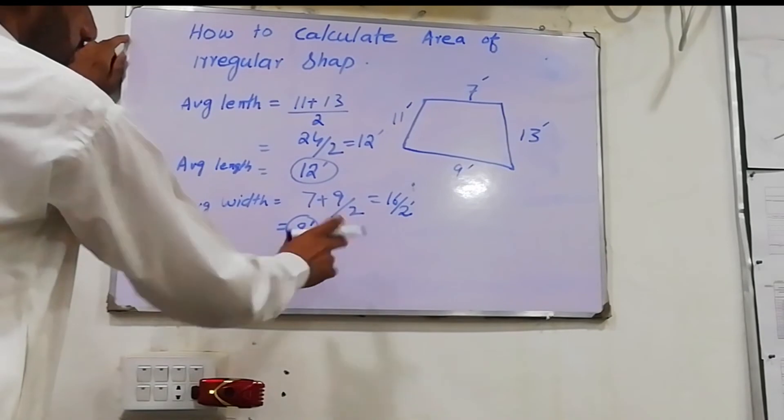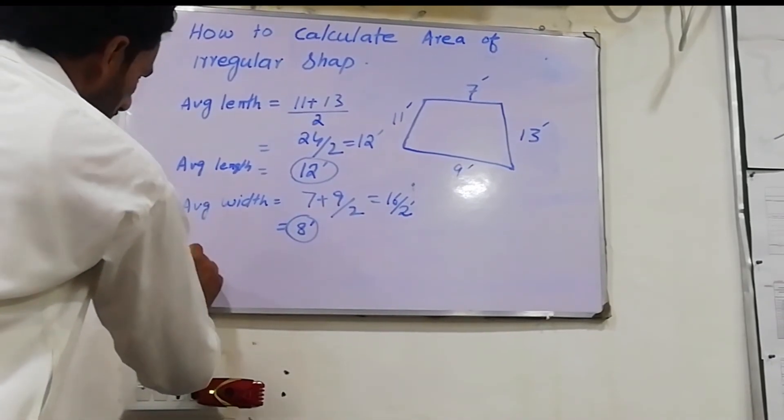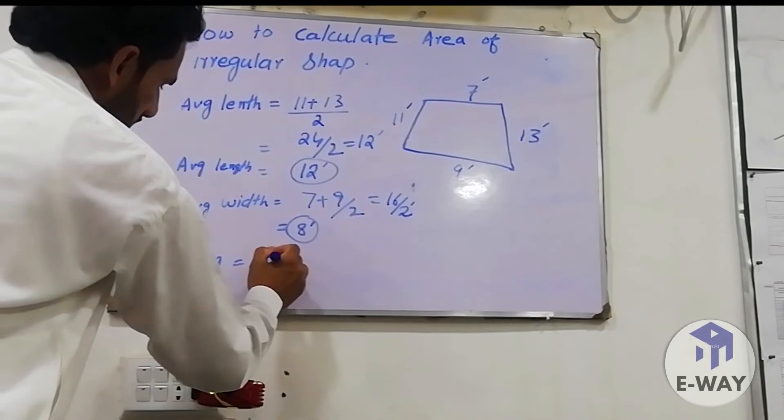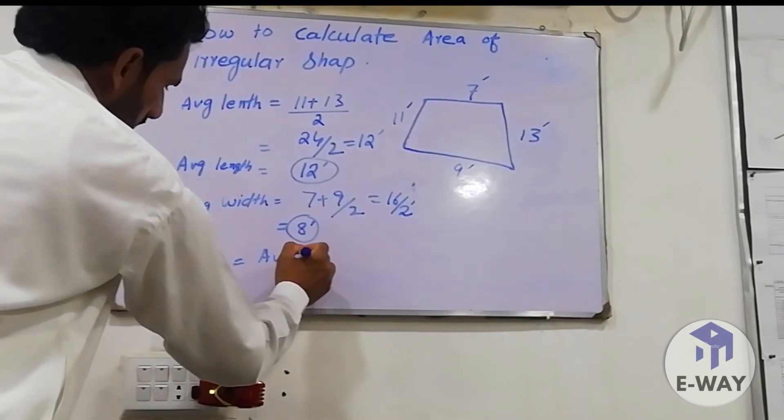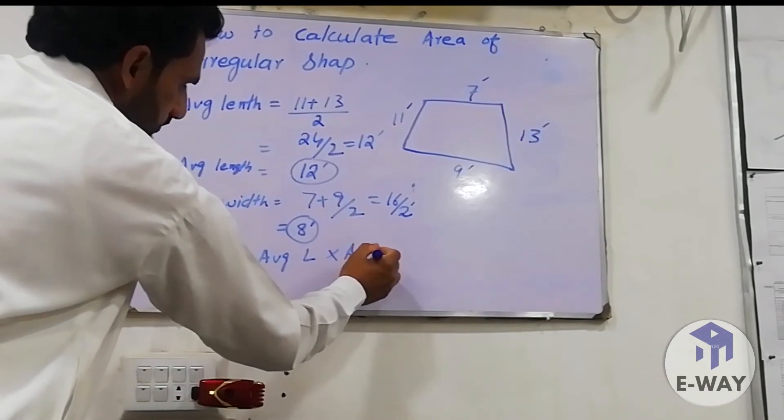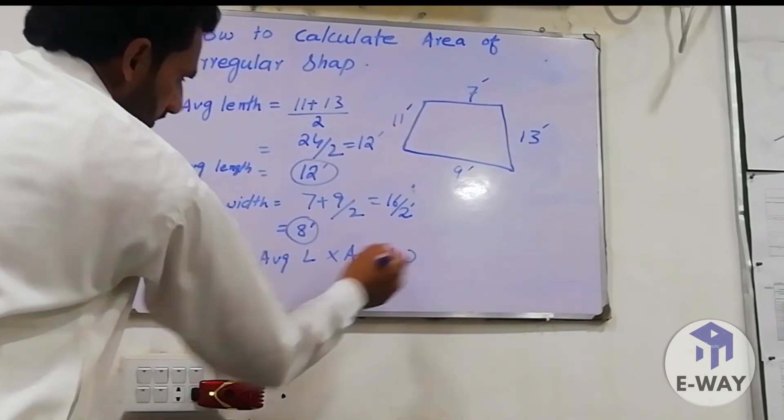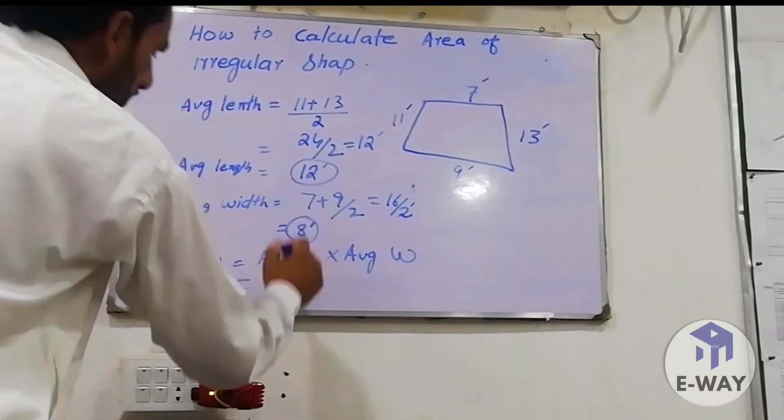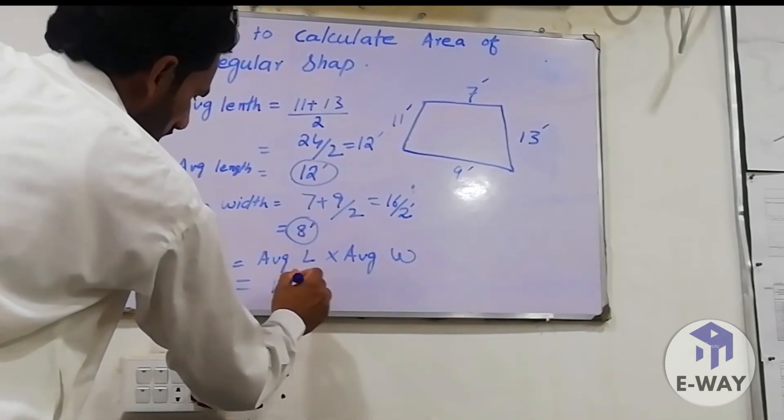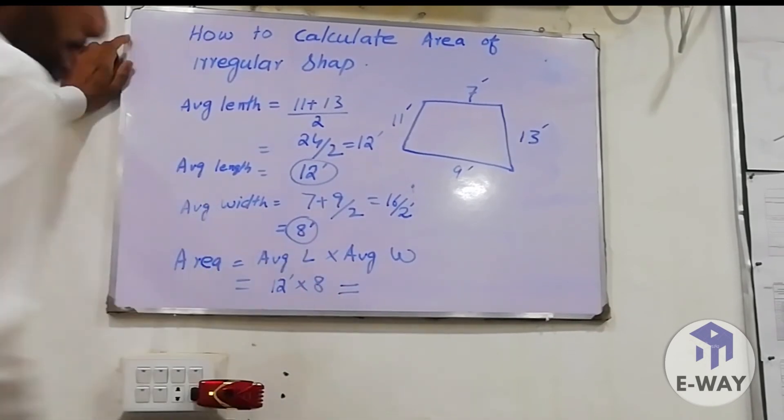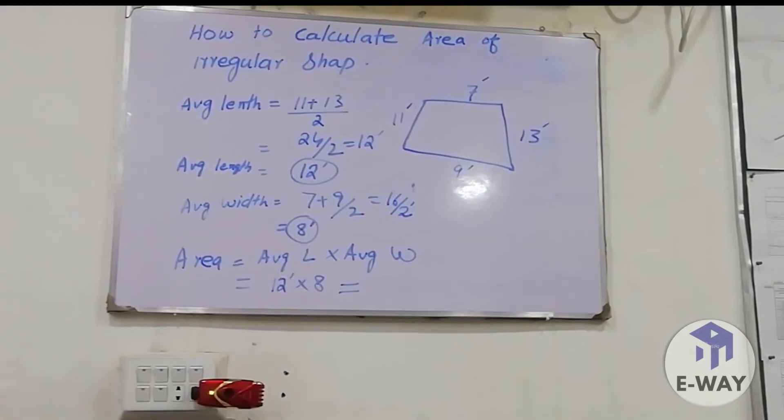One side average length is 12, second side average width is 8. Now we can find this shape's average area. Area equals average length times average width. Average length is 12 multiplied by average width which is 8.